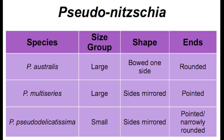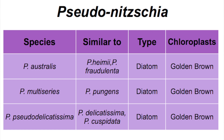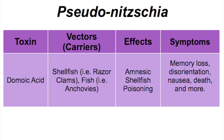This cell type is 1.5 to 3.4 micrometers wide, 50 to 140 micrometers long, and both sides of the cell are the same, both appearing generally straight. Here's a quick review of characteristics from the video to help you identify these Pseudo-nitzschia species.